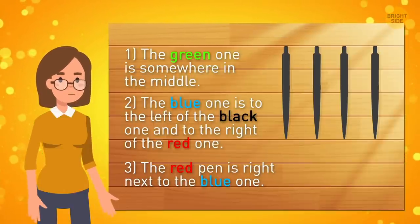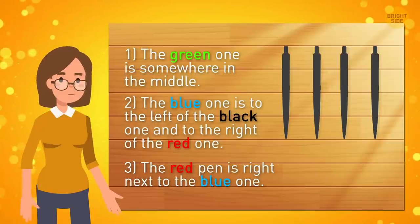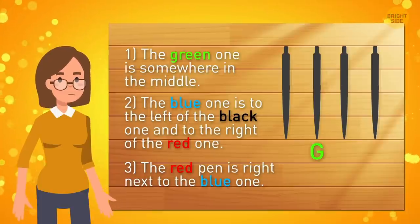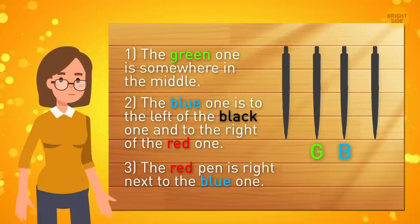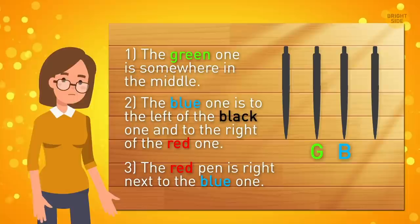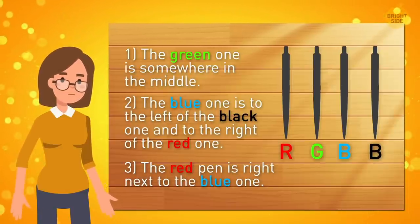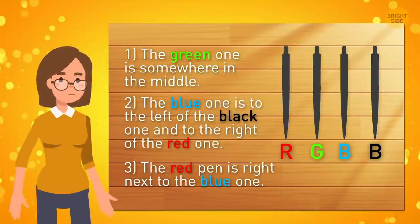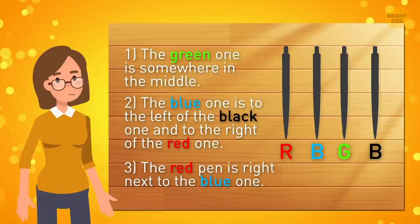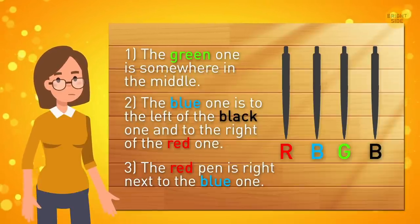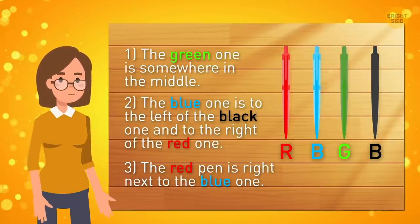Green is somewhere in the middle. Since blue has some other colors on both sides of it, it means it's in the middle too. Let's decide which one is where. If the green pen is in position 2, then the blue one takes position 3. We know that the blue one is on the left of the black one, so black takes position 4 and red must be in position 1. But it doesn't fit because the last condition is that the red and blue ones are next to each other. So, let's switch the green and blue. Now, blue is right next to red, but is still to the left of black. So, the right order is red, blue, green, black.